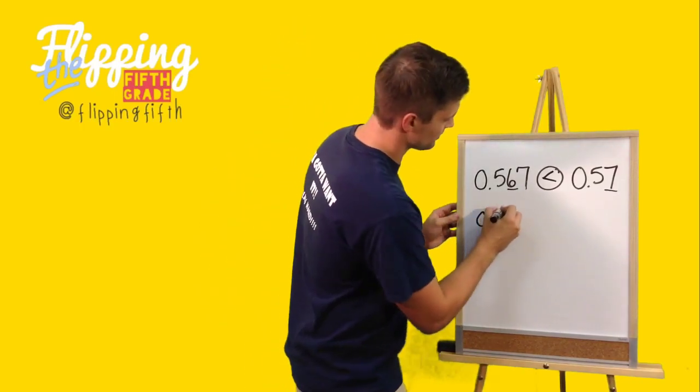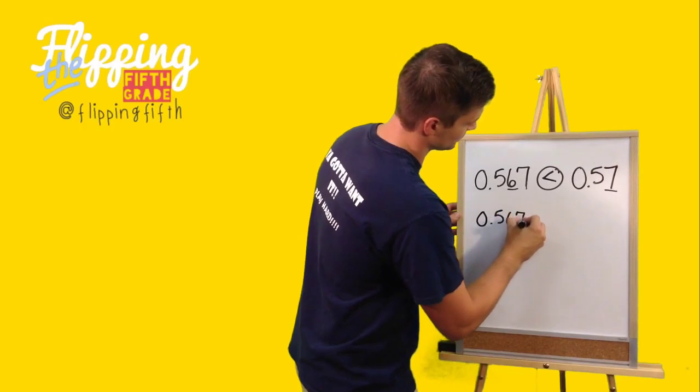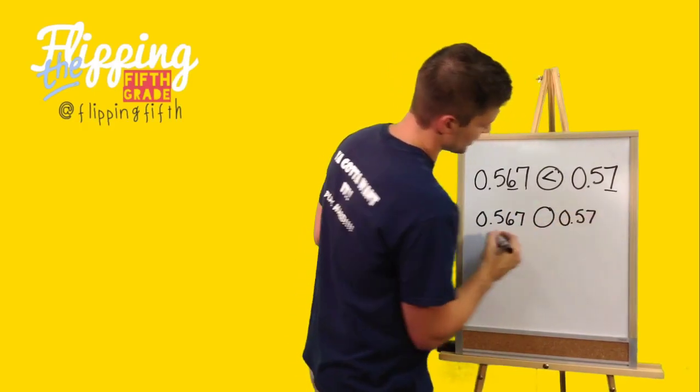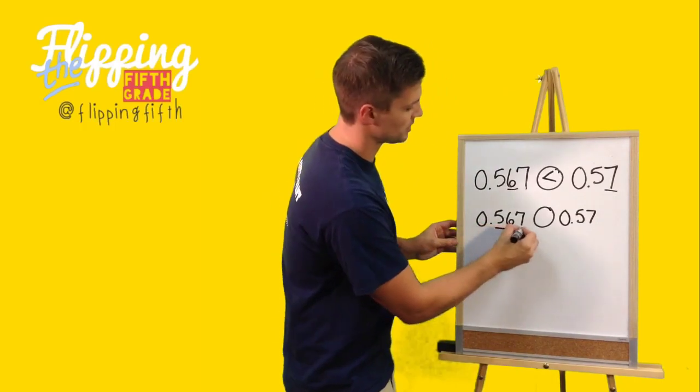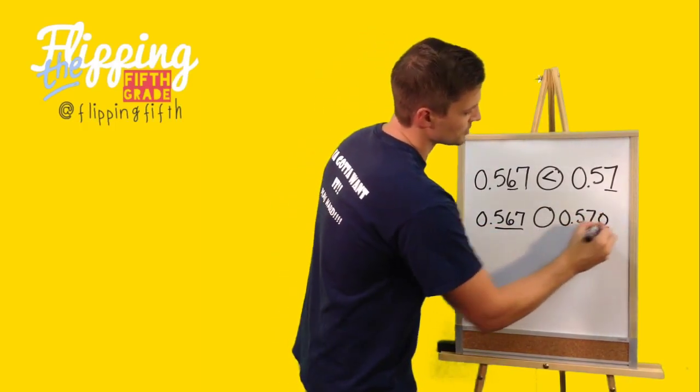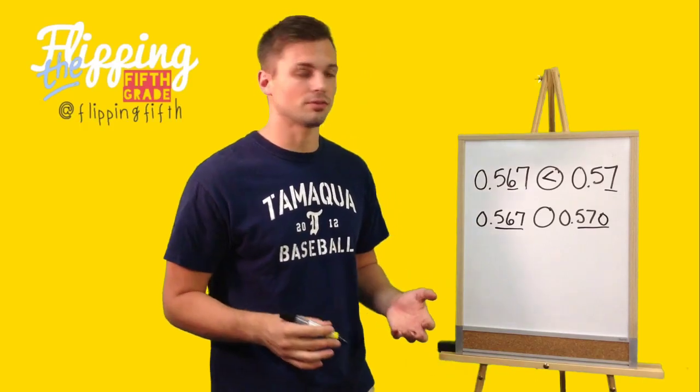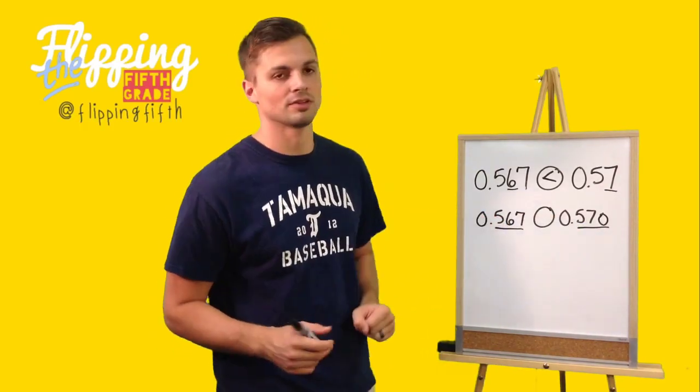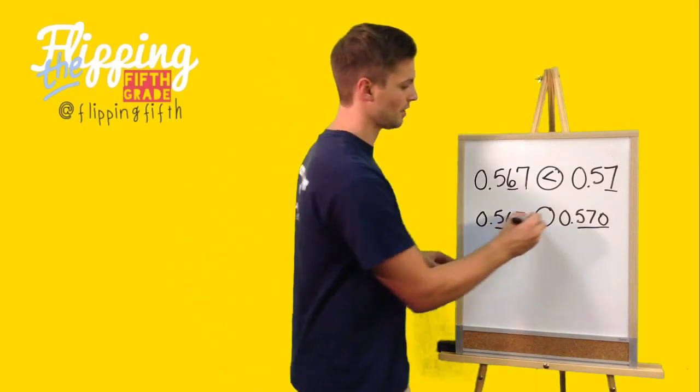If we have that same problem, and you see that this side has three digits, you can easily just add a zero to the other side and make it also have three digits. Now, it's easy to see because 570 is greater than 567.